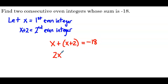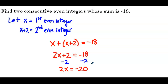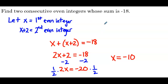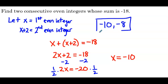On the left side we combine like terms, so we have 2x plus 2 equals negative 18. Subtract 2 from both sides: 2x equals negative 20. Multiply both sides by one half, or divide by 2, and we get x equals negative 10. It asks us for both consecutive even integers, so we have negative 10 as our first even integer, and adding 2 gives us negative 8. The two consecutive even integers are negative 10 and negative 8.